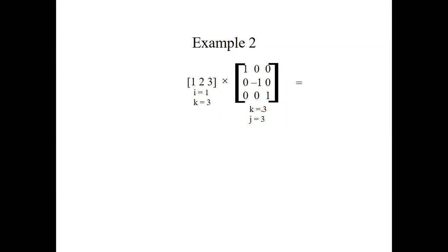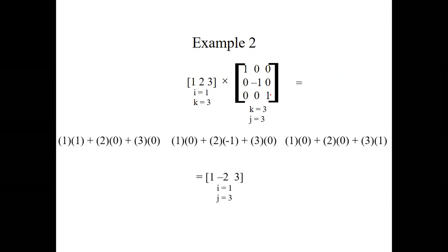We again multiply each row with each column. Since the first matrix has only one row, we multiply that row with all columns of the second matrix. Starting with the first column: 1×1 + 2×0 + 3×0, which gives 1 — the first entry of the product matrix.